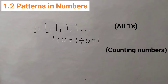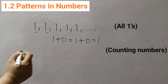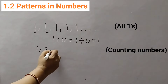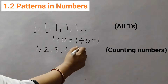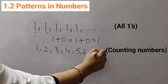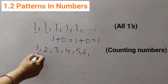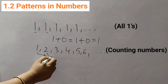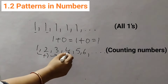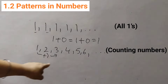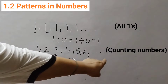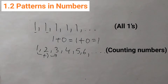The second one is counting numbers. Counting numbers start from 1: 1, 2, 3, 4, 5, 6 and so on. These are also called natural numbers or counting numbers. The rule here is we are just adding 1. 1 plus 1 is 2, plus 1 is 3, plus 1 is 4 — so just keep adding 1: 6, 7, 8, 9, 10, 11, 12, like that.